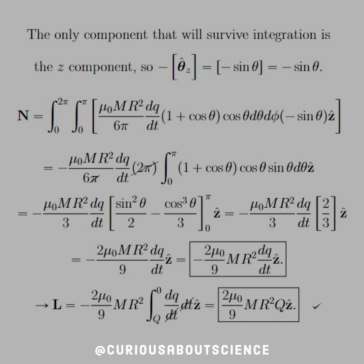For these integrals, I like using Symbolab. It makes the substitutions easy. Let it boil down. You see that the torque eventually settles down to negative 2/9 mu naught M big R squared dq/dt in the z hat.